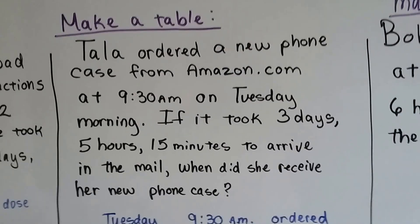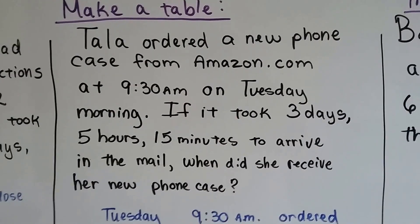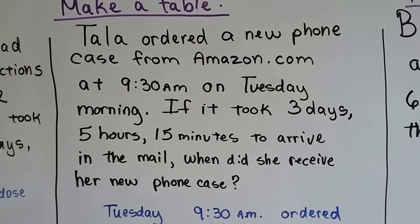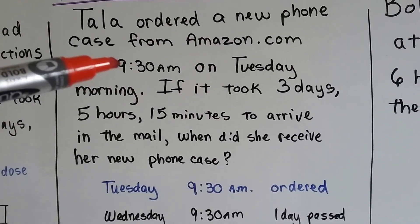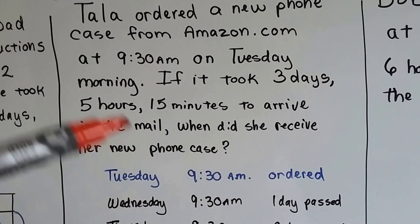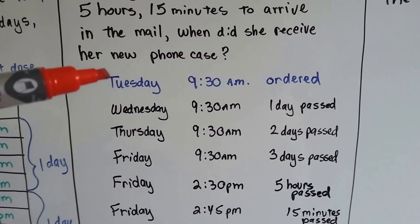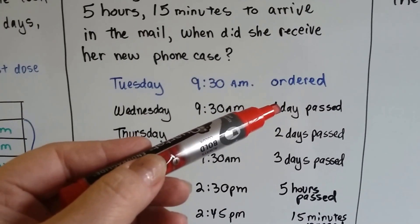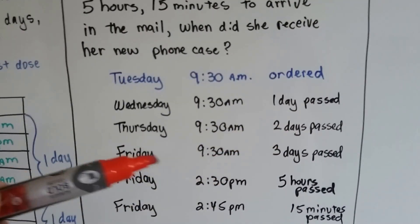Here's another one. Tala ordered a new phone case from Amazon.com at 9:30 a.m. on Tuesday morning. If it took three days, five hours, and 15 minutes to arrive in the mail, when did she receive her new phone case? So she ordered it at 9:30 a.m. on Tuesday morning. So we wrote that down—that's when it was ordered. And it was three days, five hours, and 15 minutes. So we make a table. Tuesday at 9:30 a.m. to Wednesday at 9:30 a.m.—one day passed. Thursday at 9:30 a.m.—two days have now passed. Friday at 9:30 a.m.—three days have now passed.